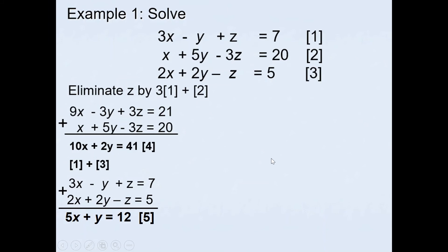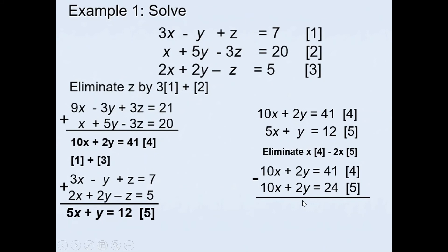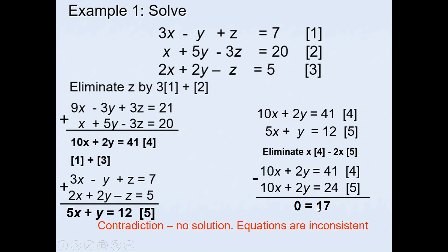Looking at equations 4 and 5, equation 4 is actually twice equation 5 — so these lines are parallel. To confirm, we multiply equation 5 by 2 to get 10x + 2y = 24, then subtract from equation 4 (10x + 2y = 41). This gives 0 = 17 — a contradiction or false statement — indicating the system has no solutions and is inconsistent.